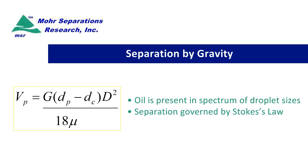The VP — that's the rise velocity of the droplets — is equal to the gravitational constant times the difference between the specific gravity, the density of the particles and the continuous phase. The continuous phase in this case is the water and the particles are the oil droplets, times the diameter of the droplets squared over 18 times the viscosity of the water.